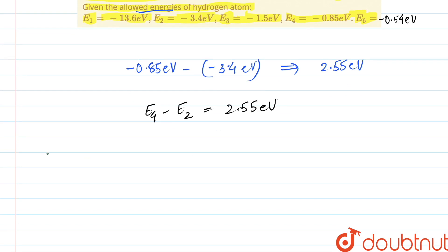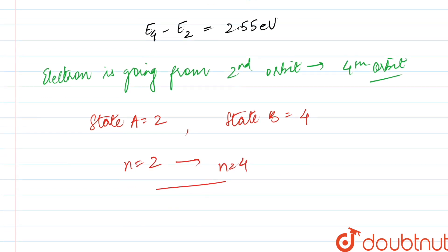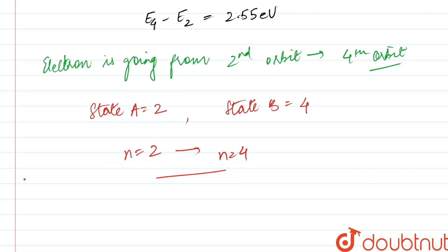That means the electron is going from 2nd Bohr orbit to 4th Bohr orbit. So therefore, we can clearly say that state A is 2 and state B is 4 because the electron is moving from N equals 2 to N equals 4 after energy is being absorbed. So this is going to be our answer.